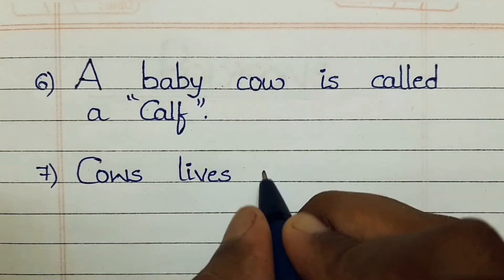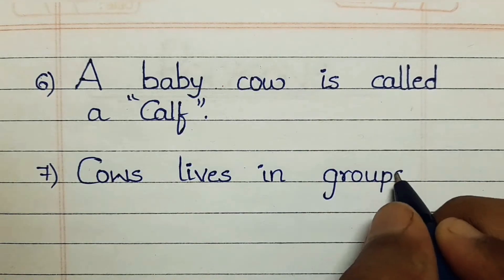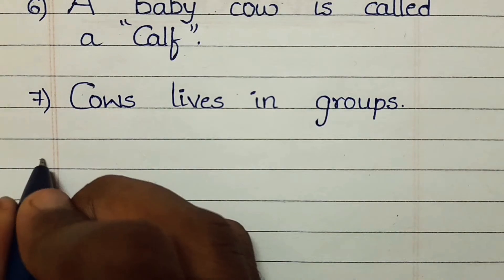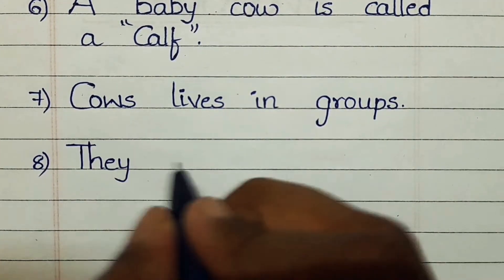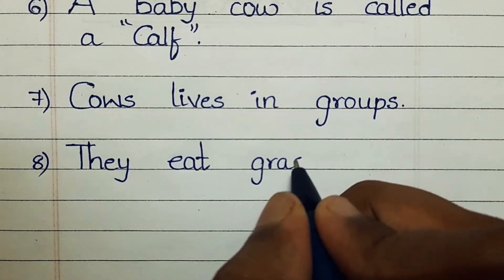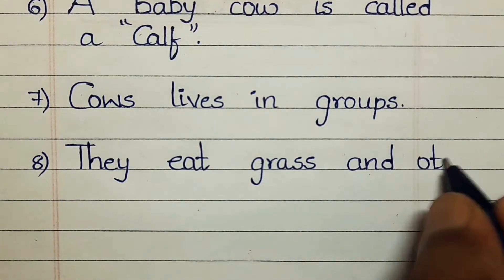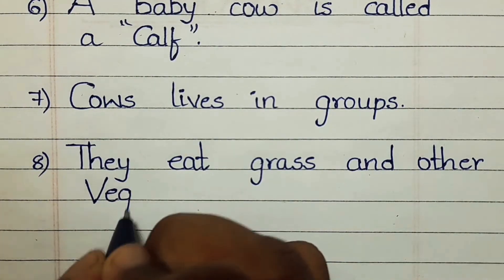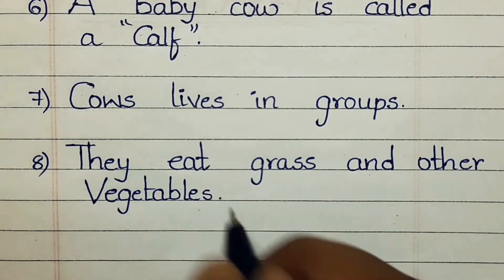Cows live in sheds. They eat grass and other vegetables.